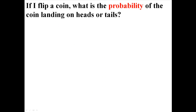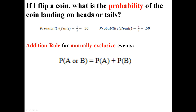So if I flip a coin, what is the probability of the coin landing on heads or tails? This should be pretty obvious — it's going to be 100%, because you're either going to get heads or tails. But let me show you how to do this mathematically. The probability of getting tails is 0.5 or 50%, and the probability of getting heads is 0.5 or 50%. We're going to use the addition rule for mutually exclusive events, which means that the probability of event A or event B happening is just the probability of A plus the probability of B. So in this case, 50% plus 50% is 100%, and that makes sense.